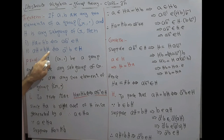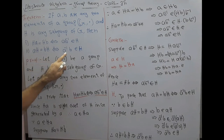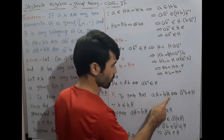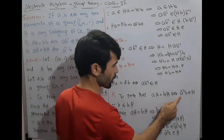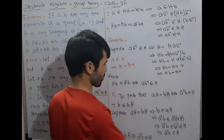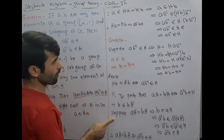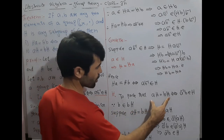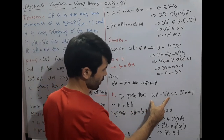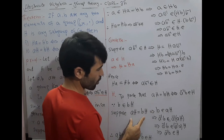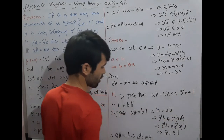Case two: aH = bH if and only if a⁻¹·b belongs to H. To prove that aH = bH if and only if a⁻¹·b belongs to H. We suppose the left side: aH = bH. Since b belongs to bH, this follows.